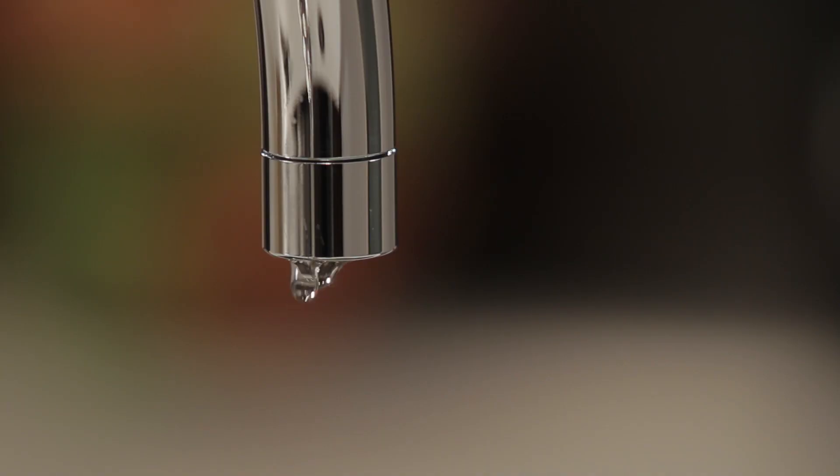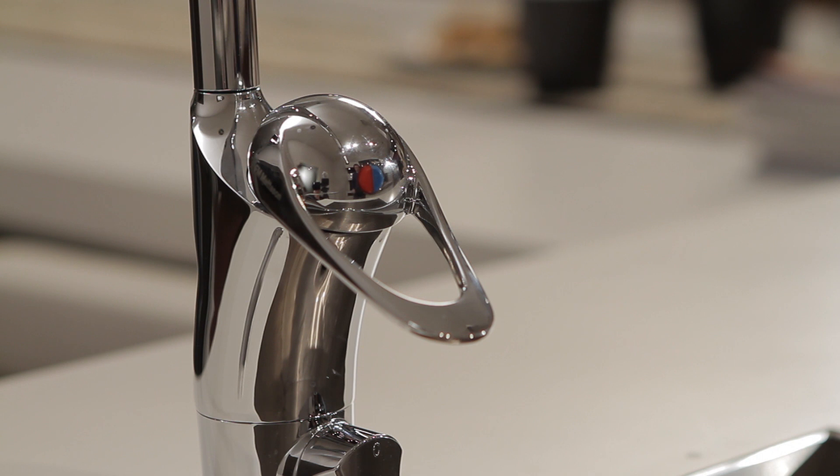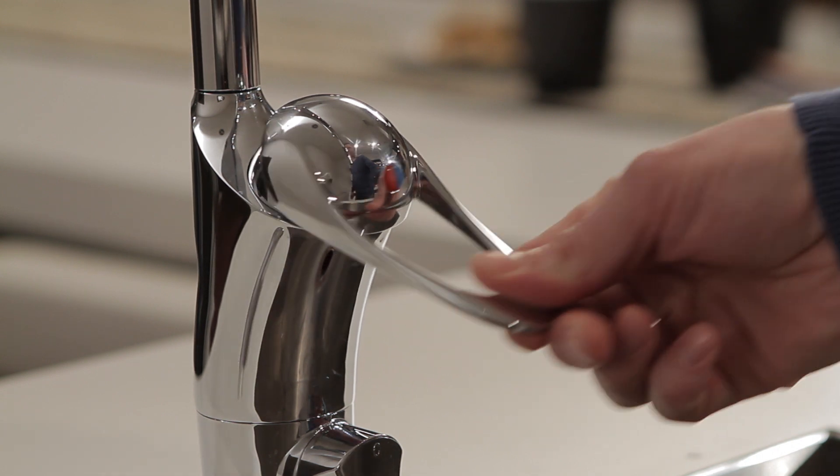A dripping tap can be both annoying and wasteful. If it drips even when the tap's properly turned off, then it's time for a cartridge change. A worn cartridge can also cause the lever to stick.